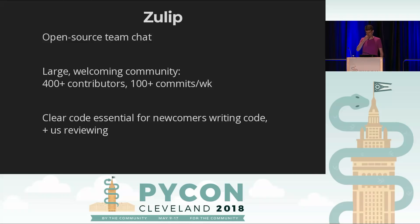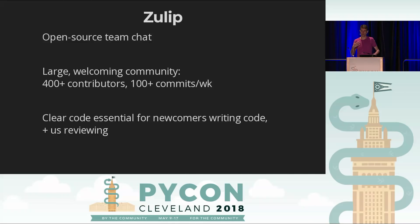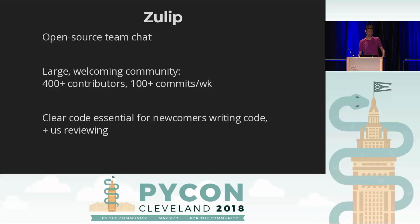That's not easy — lots of open source projects don't manage that. It takes a lot of work and skill. One of the key things it takes is making the code clear, because if the code is clear, people can come, understand it, and write good changes. And if it's clear, we're in a much better position to review contributions and determine whether they're good, so we can actually merge them — which is a barrier for a lot of open source projects.